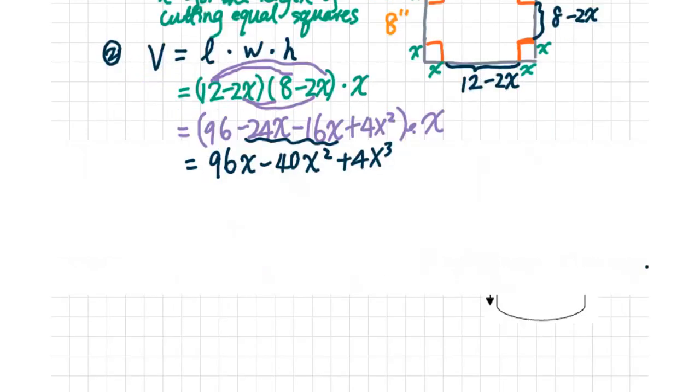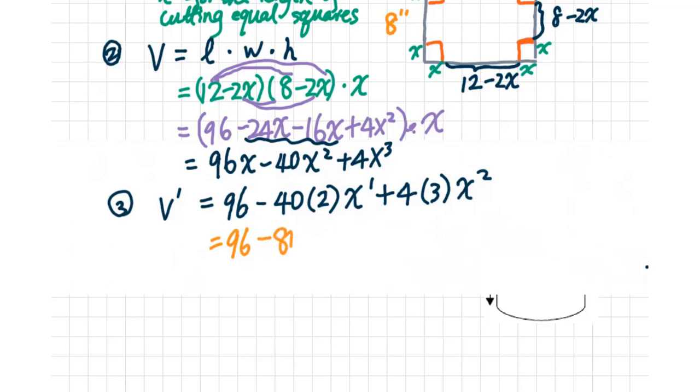Then the third step, you will work out the derivative. V prime equals 96 minus 40 times 2 times x to the first power plus 4 times 3x squared. Organized, you will get 96 minus 80x plus 12x squared.